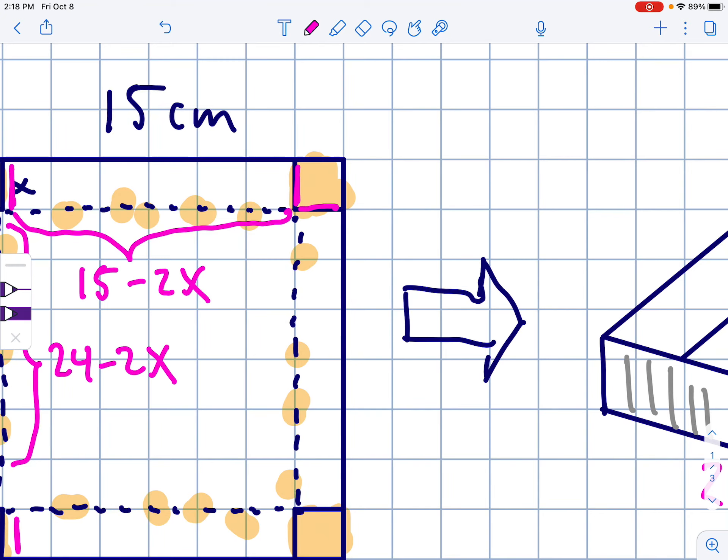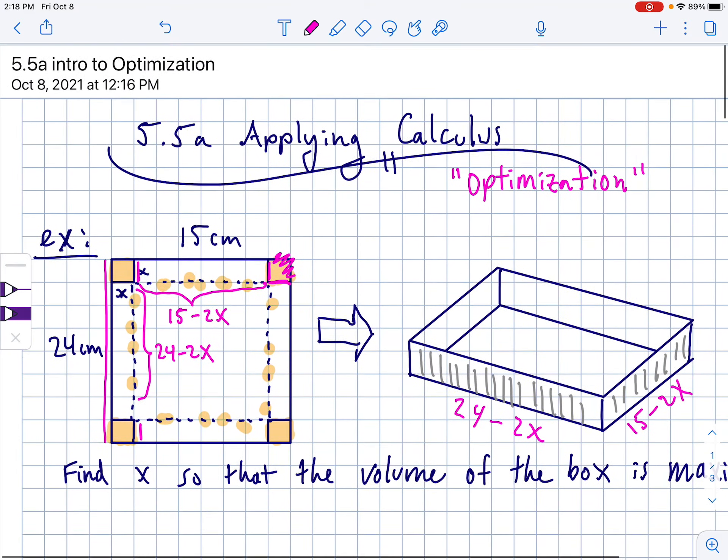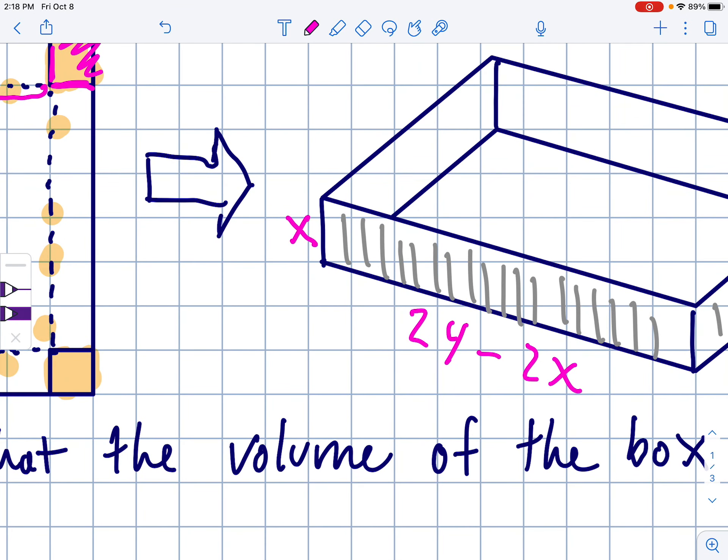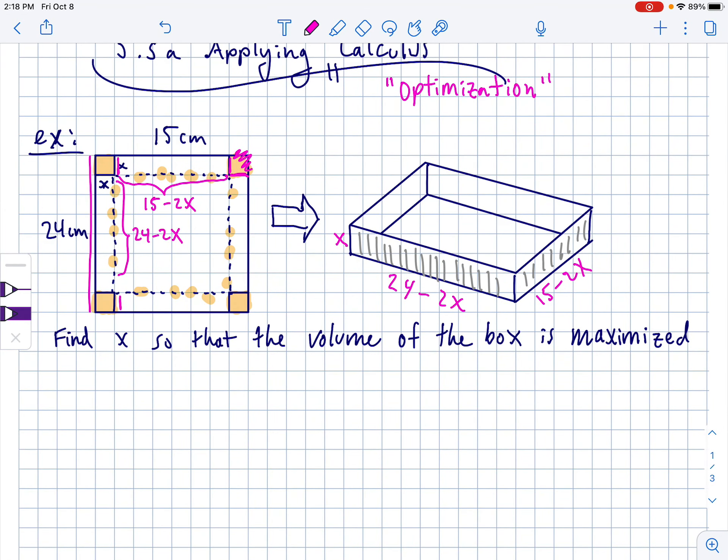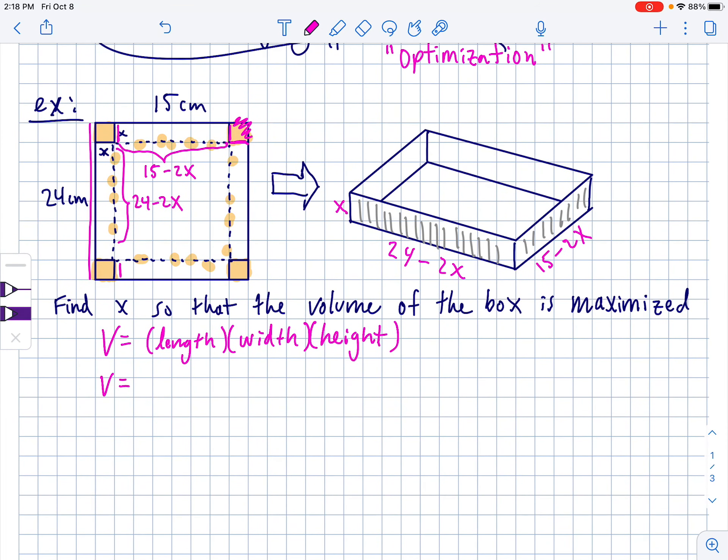Then the last thing you kind of have to picture is that if you're folding up these corners, like when you fold that, this side will line up with this side because this part will be gone and then it will fold up, meaning that the height of this box is x. Now to find the volume of a rectangular solid like that, you need to multiply length times width times height. So volume equals length times width times height. Don't say height. Height is not a word. I got busted on that years ago by a student.